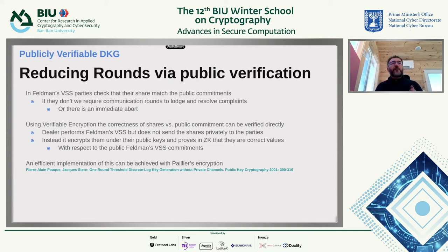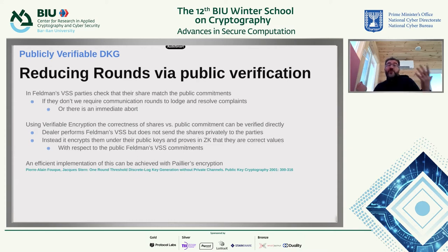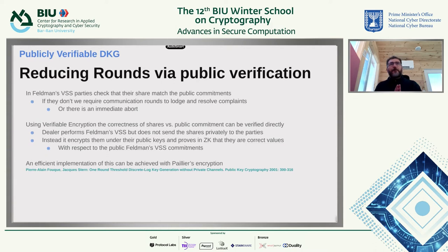In Feldman VSS and Pedersen VSS, the parties check that their shares match the public commitments to the polynomial through a process of evaluation in the exponent. If those values don't match, there is either an abort or additional communication rounds used to lodge a complaint — saying my share doesn't fit into the committed polynomial — and then the dealer has a chance to resolve that complaint. There is a notion of what we call publicly verifiable secret sharing, which says it's possible to verify that the sharing has been performed correctly by everybody, not just by the individual players checking their own shares.